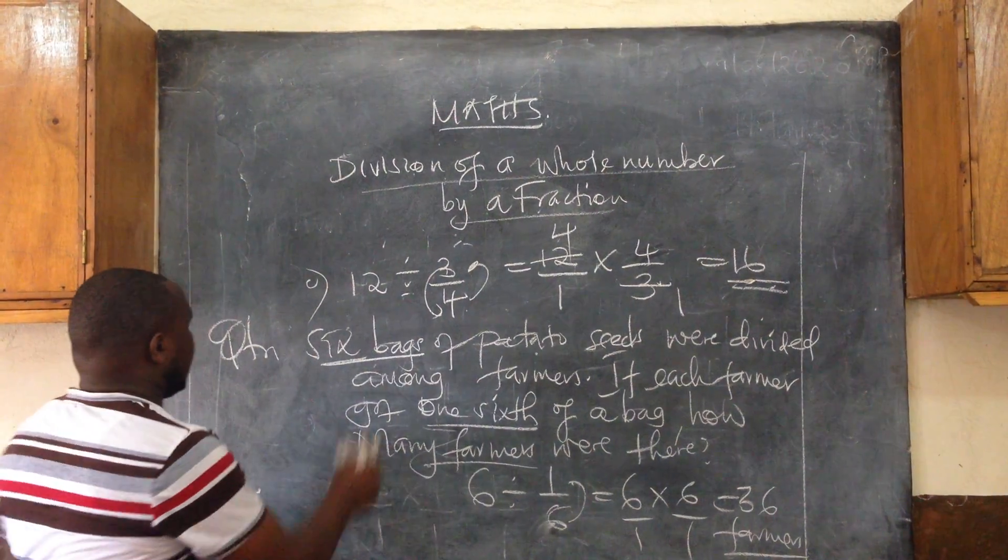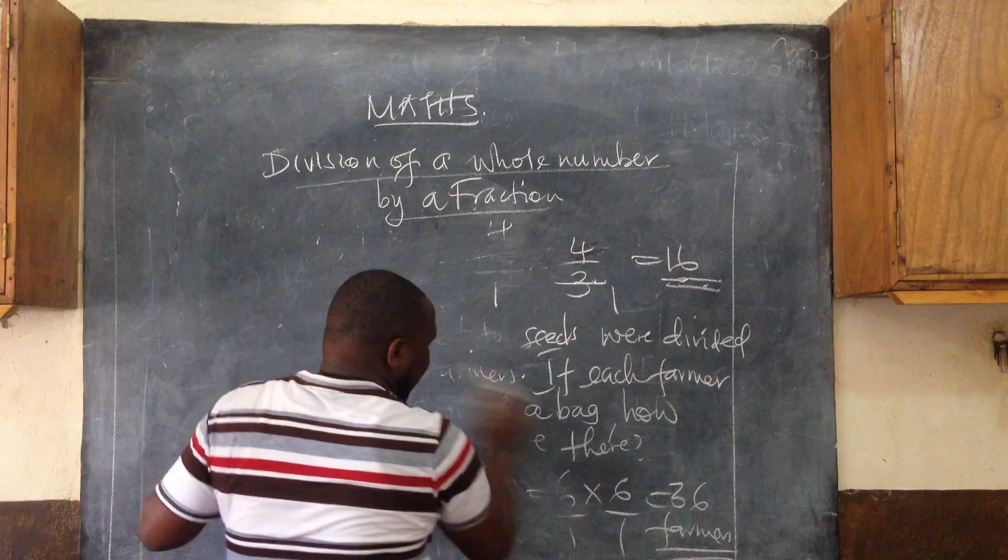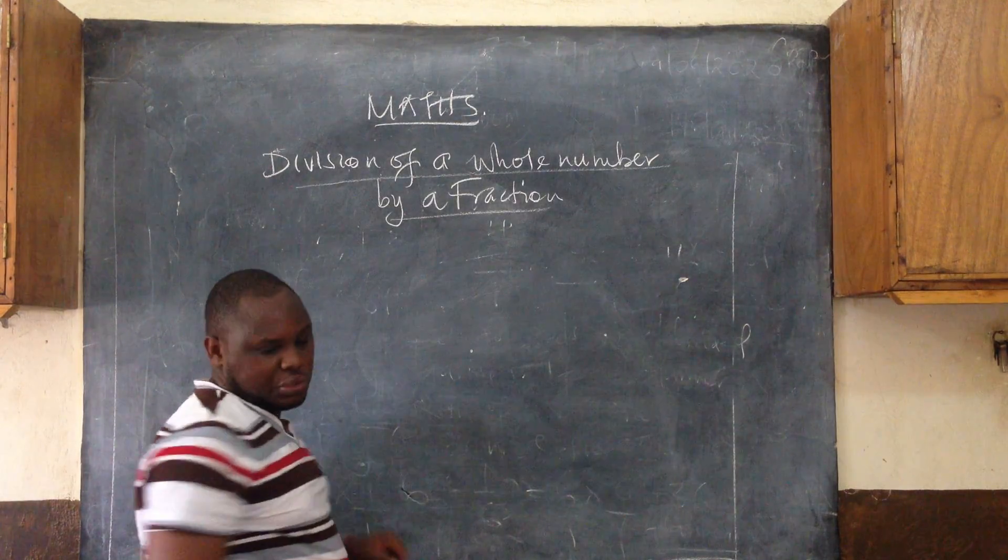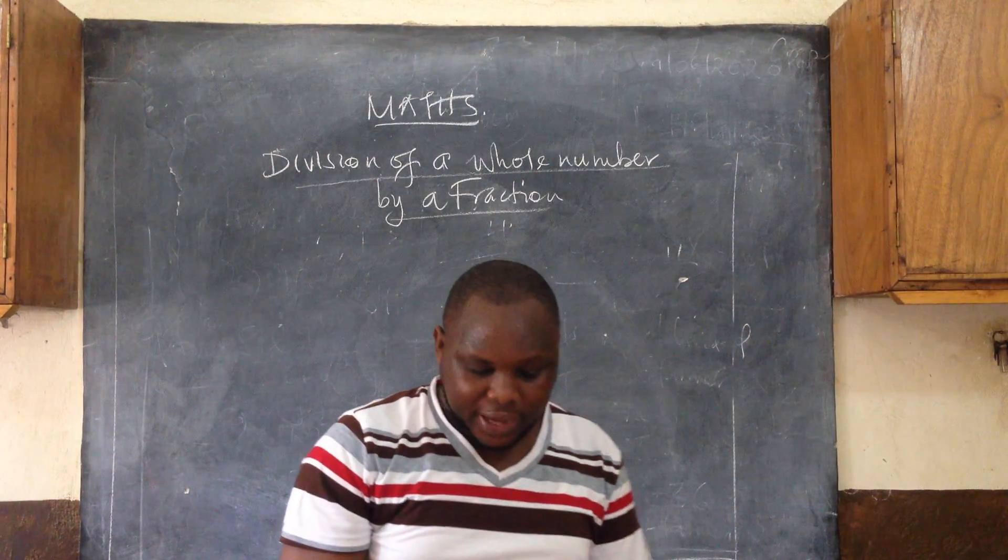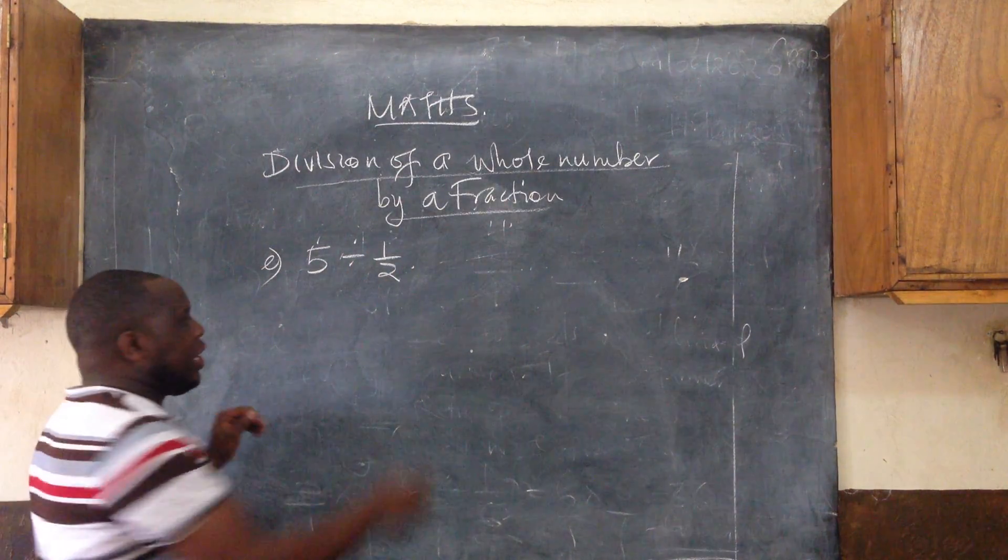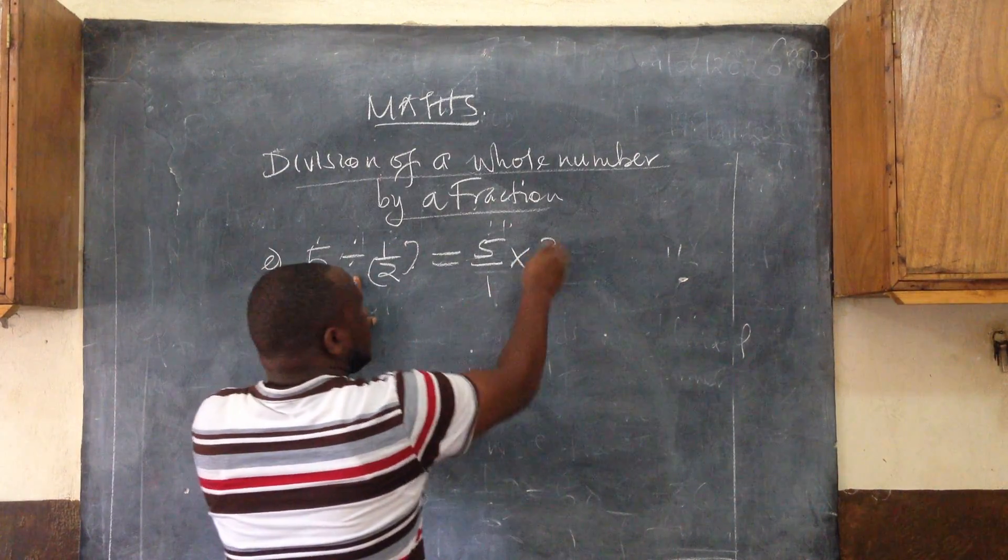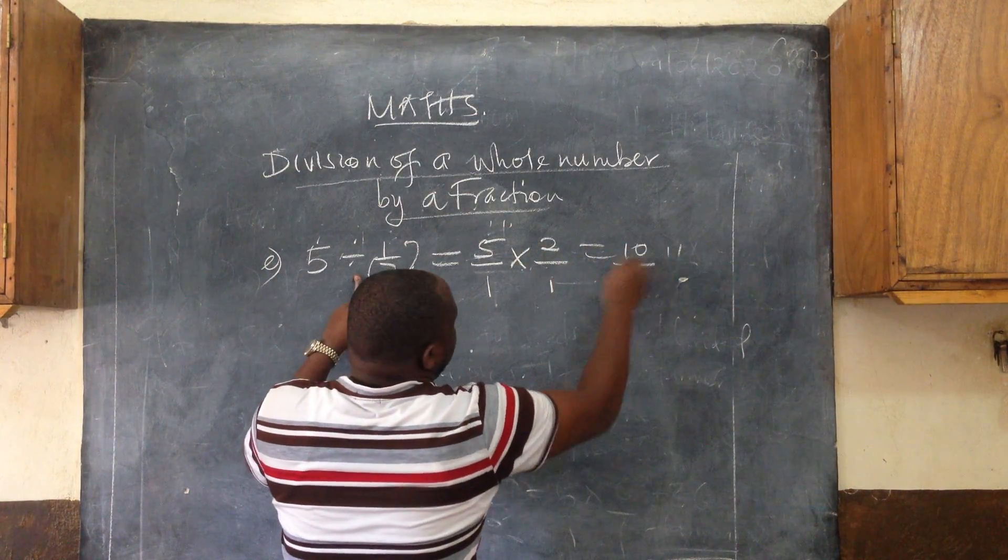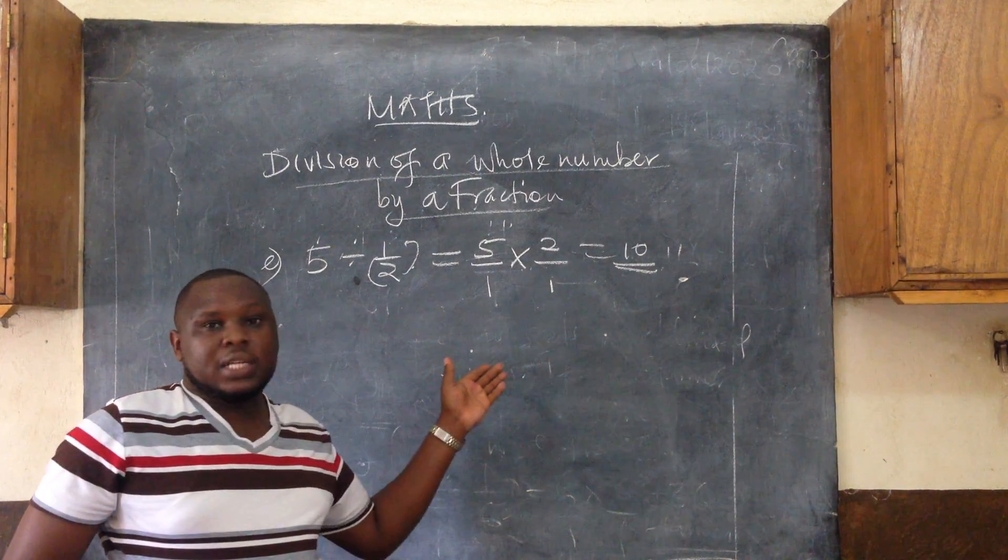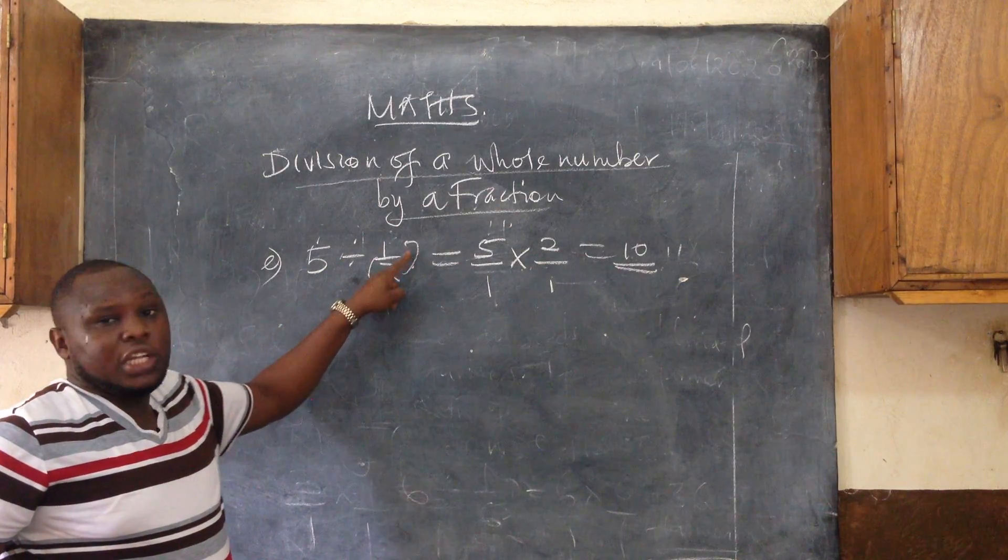Let me do one last example before I give you an assignment. Divide 5 by 1/2. The same way: 5 over 1, the division changes to multiplication, and 1/2 becomes the reciprocal which is 2 over 1. That gives you 10. All of these questions are done this way. The idea of reciprocals is we use them to change the division sign to multiplication and turn the second part into its reciprocal.